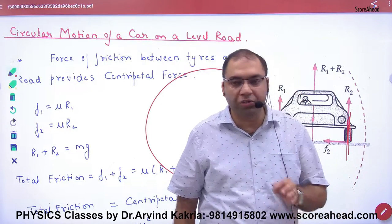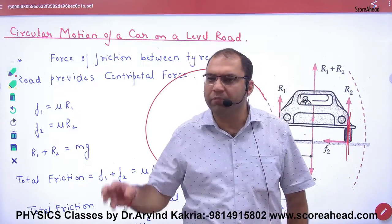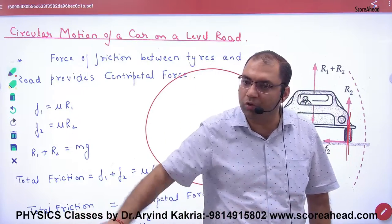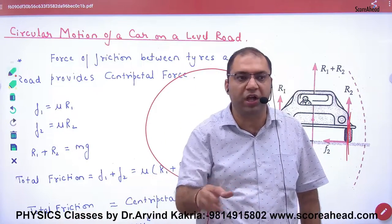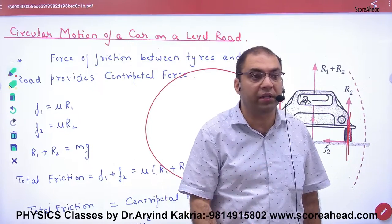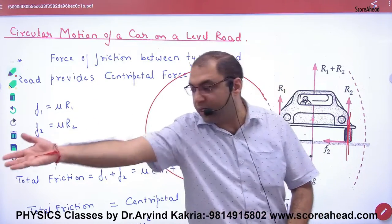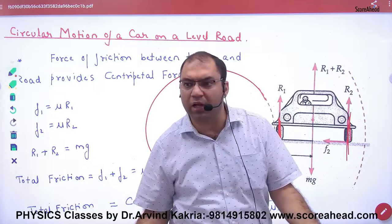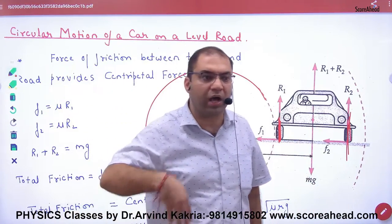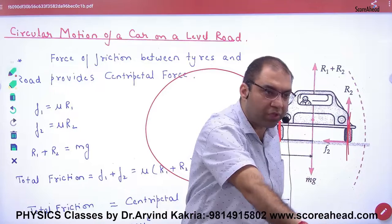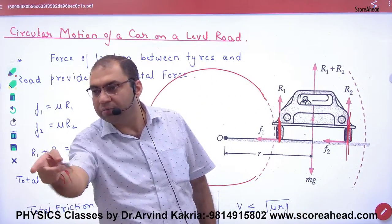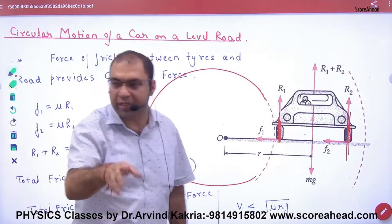The second question: if you have a train, the rails have to guide it around a curve. Which rail should be higher — inner or outer? Outer. The train tends to go outward, so the outer rails will be higher. Clear?